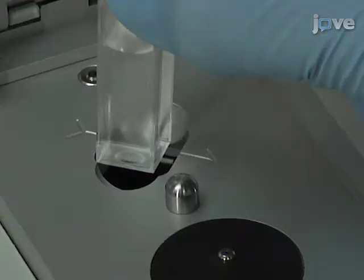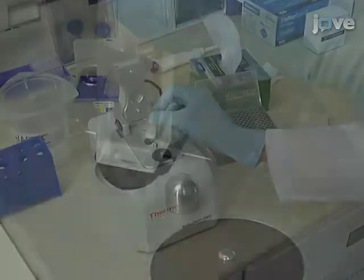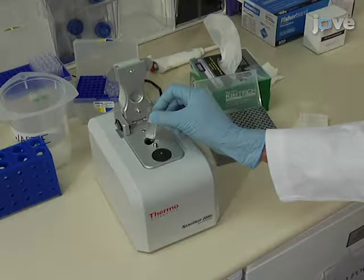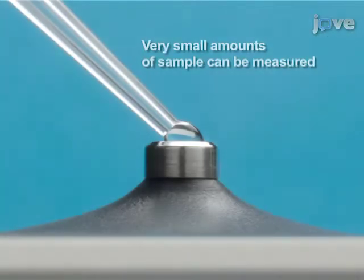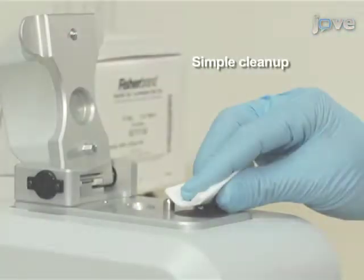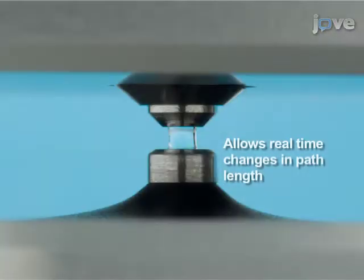Removing traditional containment devices such as cuvettes from the system has several advantages. Very small amounts of sample are needed for measurement, one to two microliters. Cleanup simply requires wiping the optical surfaces with a laboratory wipe and the path length automatically changes in real time during the measurement.